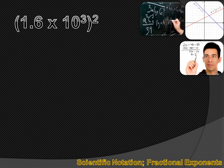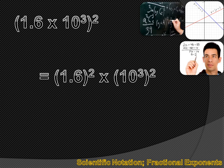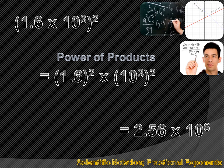Let's see how this works with numbers in scientific notation. If I had 1.6 times 10 to the third and wanted to square that expression, I'd distribute the square to both 1.6 and 10 to the third — that's the power of products property. Then I carry out the math: 1.6 squared equals 2.56, and 10 to the third squared equals 10 to the sixth, using the power of powers property — multiply the two exponents to get the resulting exponent.